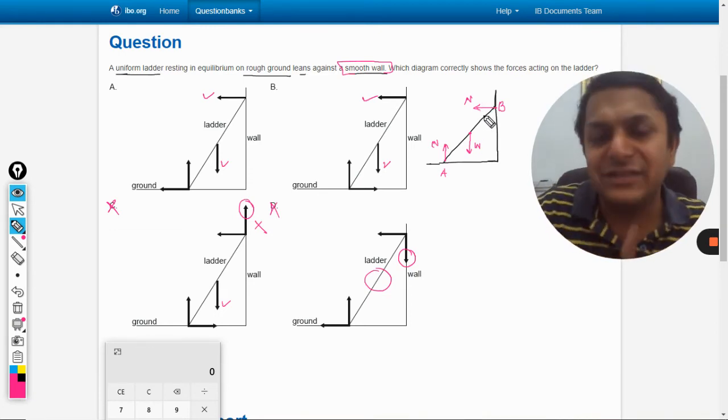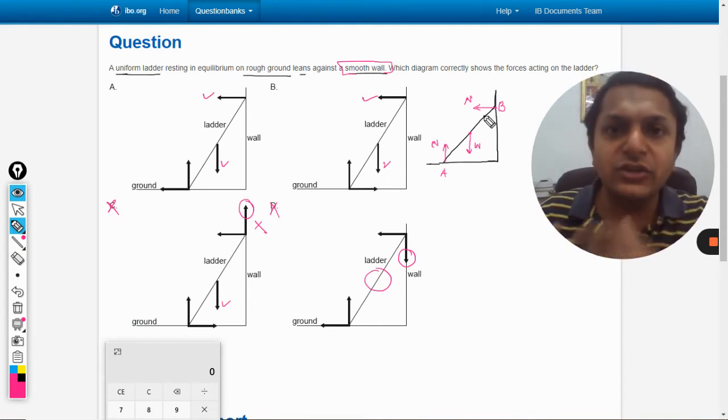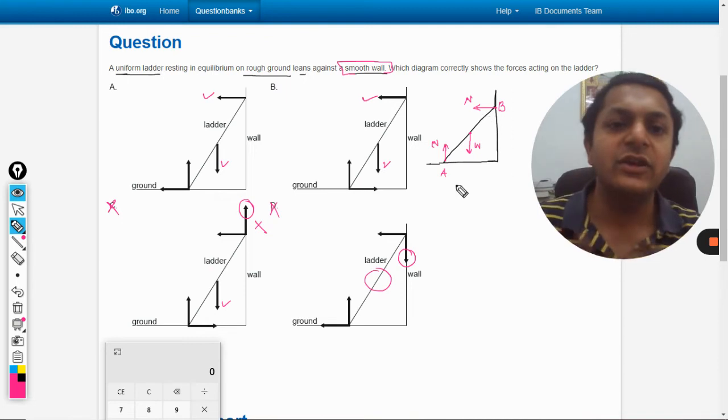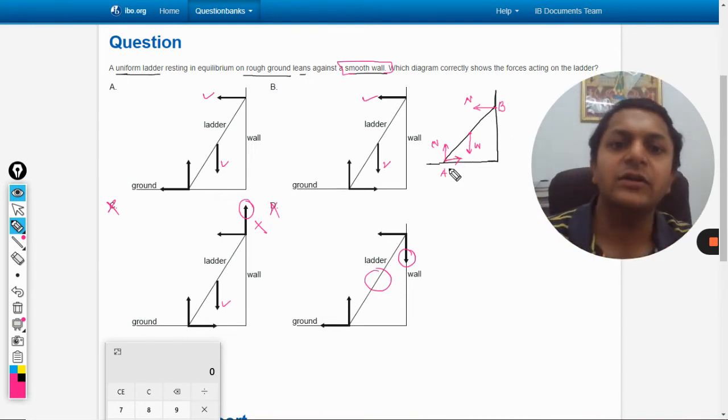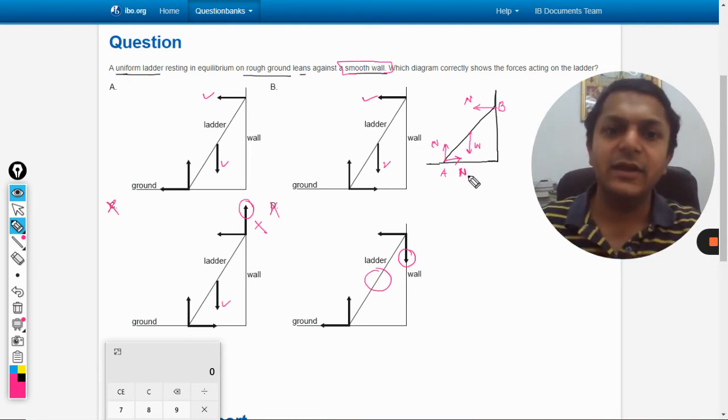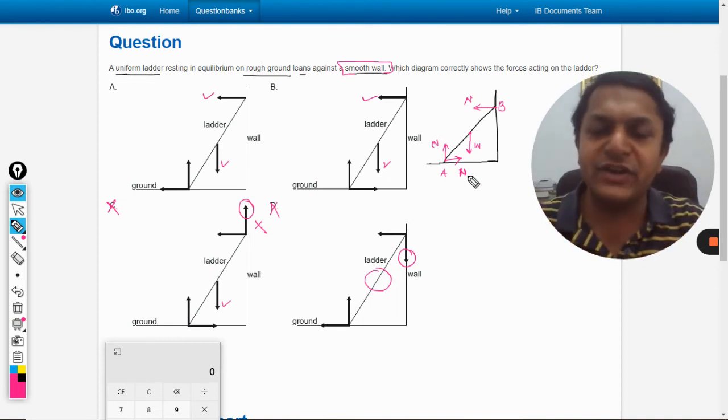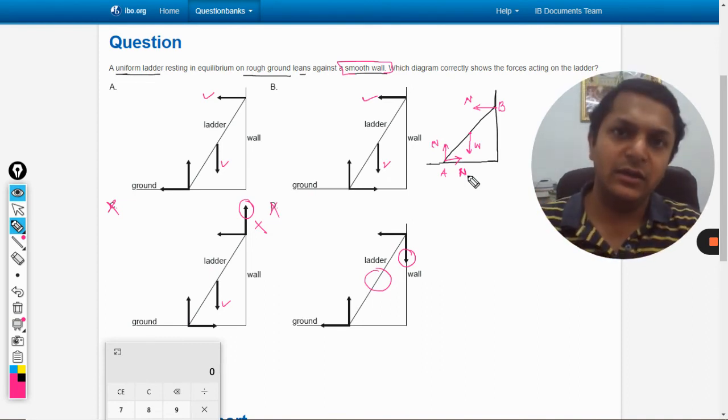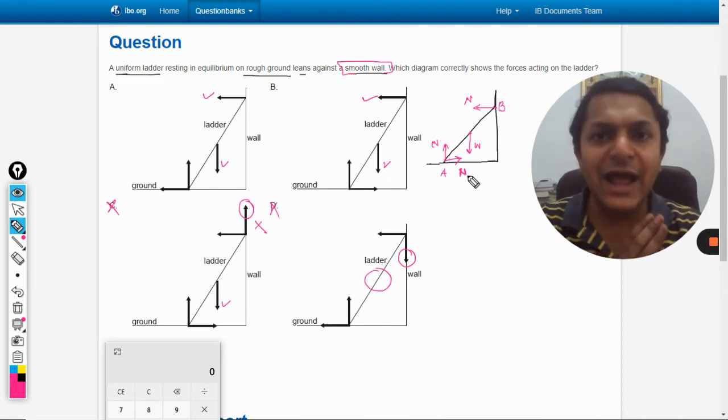So there has to be a force in the right direction. Where will that force be? That force will be here. Now this is also a normal reaction which will be acting in a horizontal manner, and it will be acting because of friction at point A, because friction is not letting this ladder slip.